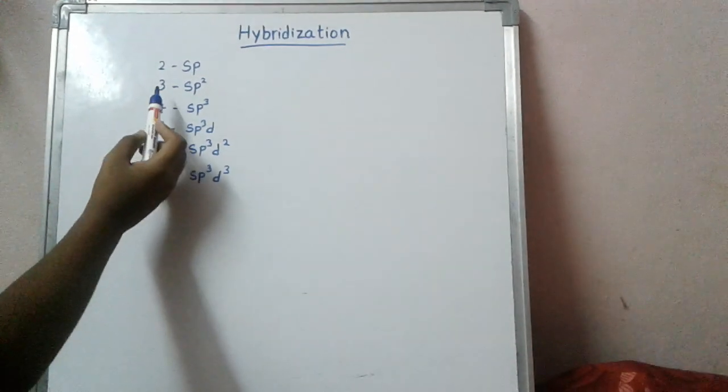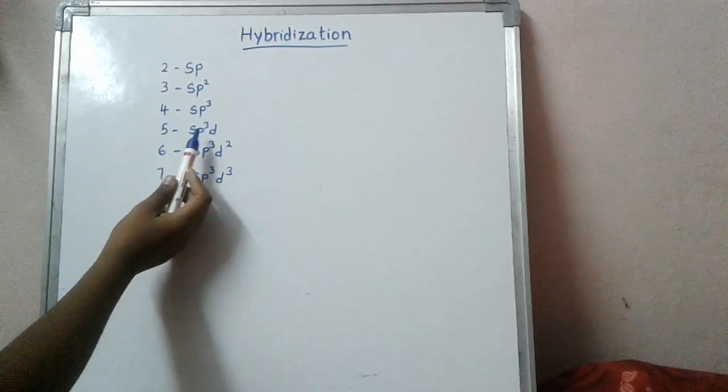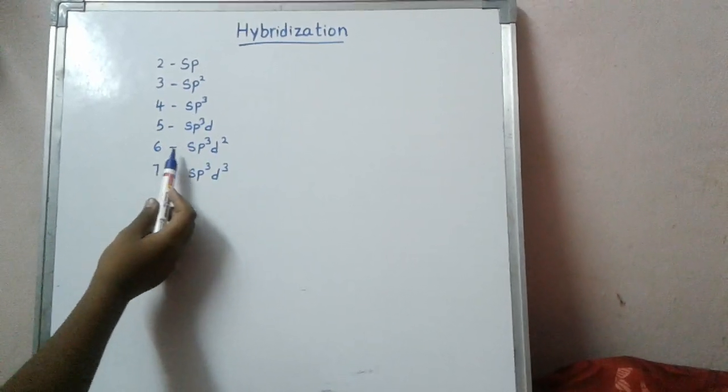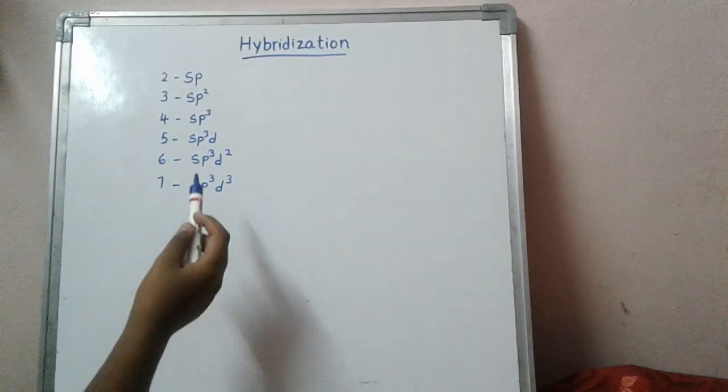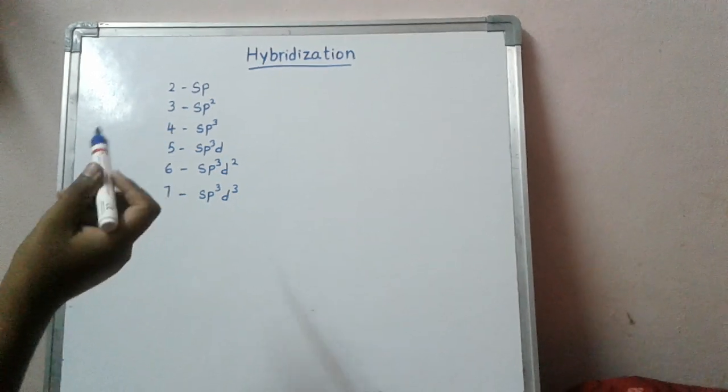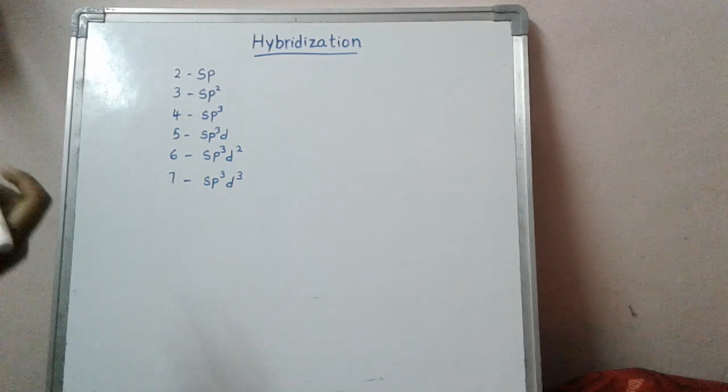When three bonds are there, sp2 hybridization. Four bonds, sp3 hybridization. Five bonds, sp3d hybridization. Six bonds, sp3d2 hybridization. Seven bonds, sp3d3 hybridization. To find the hybridization, you need to know the valence of the atom.